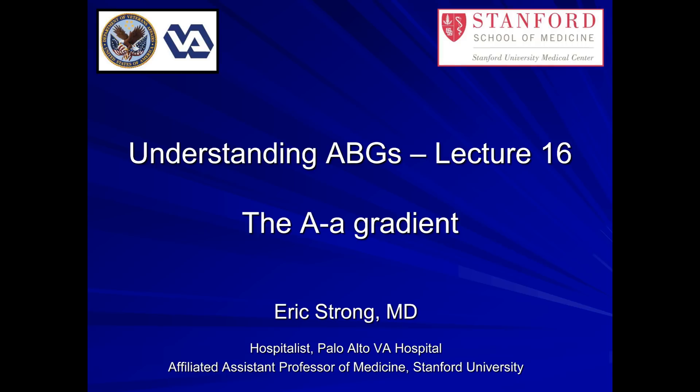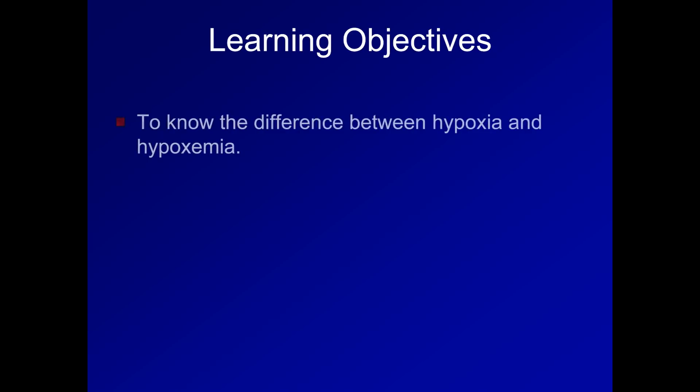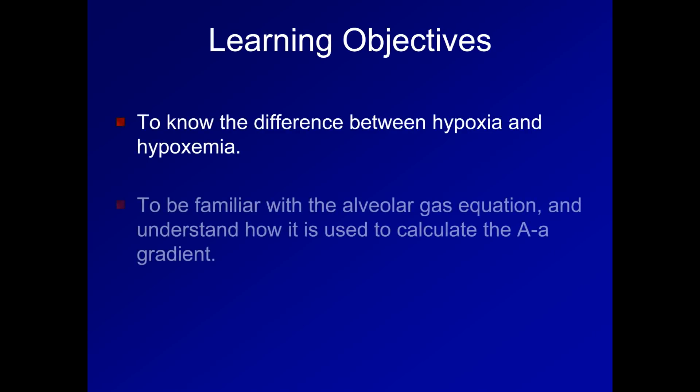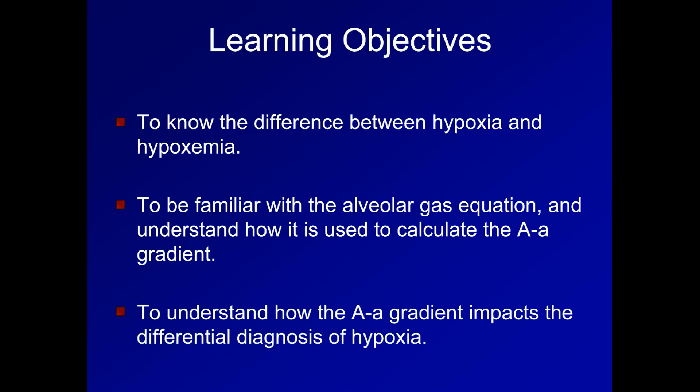This lecture marks a major transition point in this course on Understanding ABGs, where I move from discussing acid-base disorders and focus now on disorders of oxygenation. The learning objectives are to know the difference between hypoxia and hypoxemia, to be familiar with the alveolar gas equation and understand how it is used to calculate the AA gradient, and finally to understand how the AA gradient impacts the differential diagnosis of hypoxia.